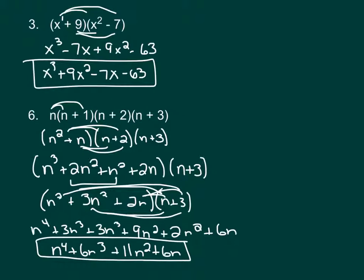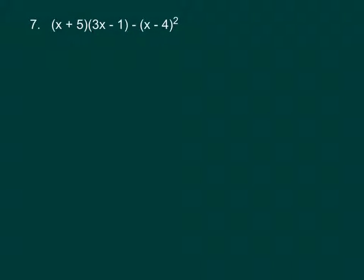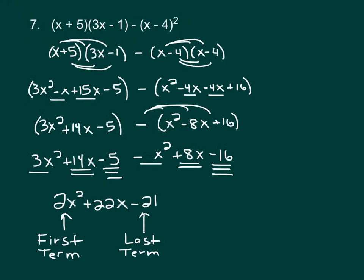Number 7 wants us to find the first term and the last term if this were written in standard form. The long way is to do the entire problem out — taking x minus 4 squared and writing it out twice, double distributing, combining like terms, distributing the negative, and combining again — to finally get the first term as 2x squared and the last term as negative 21.